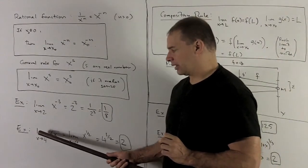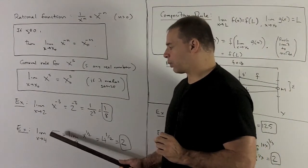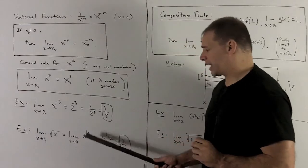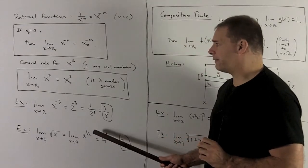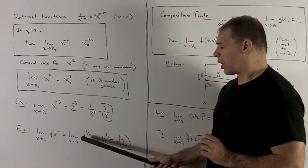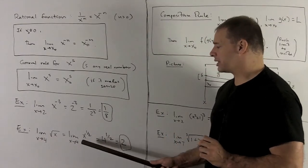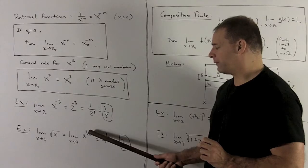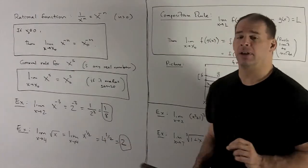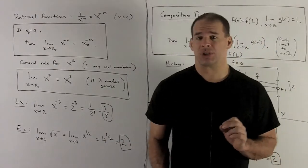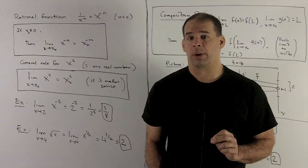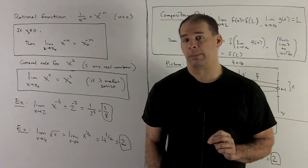If I take the limit as x goes to 4 of the square root of x — that's just x to the 1/2 — our rule applies. If I put 4 in there, that gives me 4 to the 1/2. Square root of 4 is 2, a perfectly good number, so that's going to be my limit.